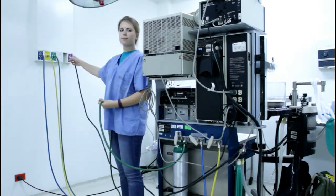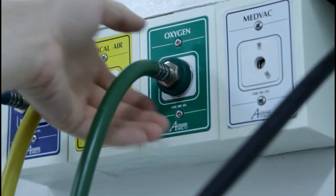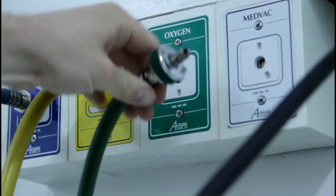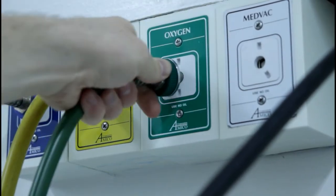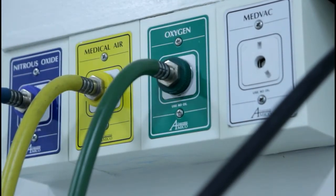In addition to the color coding system, the tube connections to the wall are keyed specifically for each gas. The connection for each gas has a slightly different shape to ensure that each is connected to its matching gas.